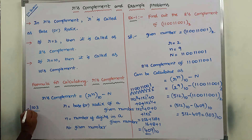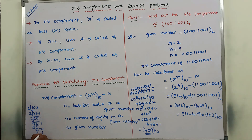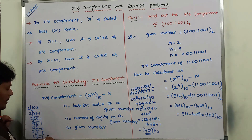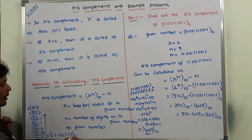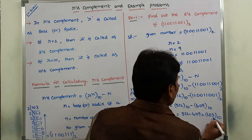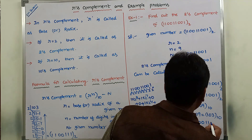To find the equivalent binary number for decimal 103, we divide repeatedly by 2. 103 ÷ 2 = 51 remainder 1. 51 ÷ 2 = 25 remainder 1. 25 ÷ 2 = 12 remainder 1. 12 ÷ 2 = 6 remainder 0. 6 ÷ 2 = 3 remainder 0. 3 ÷ 2 = 1 remainder 1. 1 ÷ 2 = 0 remainder 1. Writing the remainders from bottom to top: 1100111 base 2. So the equivalent binary number for decimal 103 is 1100111 base 2.